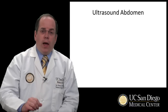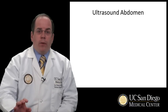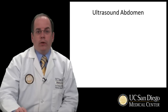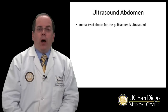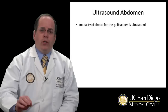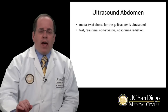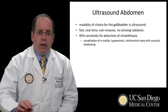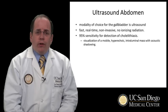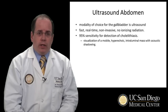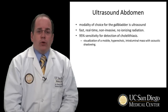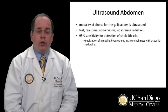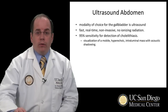Let's start with ultrasound of the abdomen. This part of the body is the region in which general surgeons have the most familiarity. The modality of choice for looking at gallbladder pathology in an acute situation is ultrasound. It's fast, real-time, non-invasive, and does not use any ionizing radiation. For the detection of cholelithiasis, it has 95% sensitivity and exceeds that of CT scanning. The visualization of a mobile, hyperechoic, intraluminal mass with acoustic shadowing is pathognomonic of cholelithiasis.